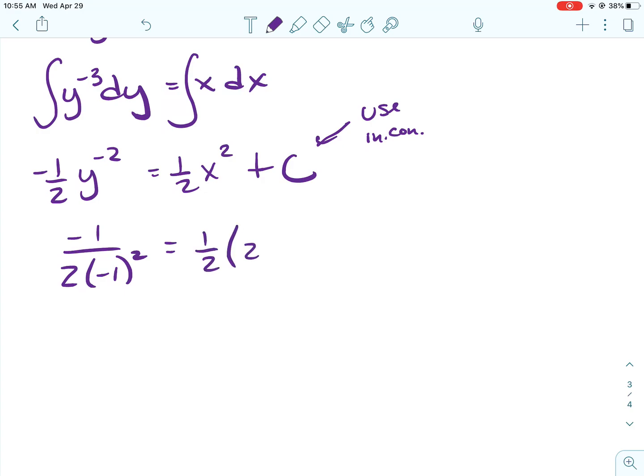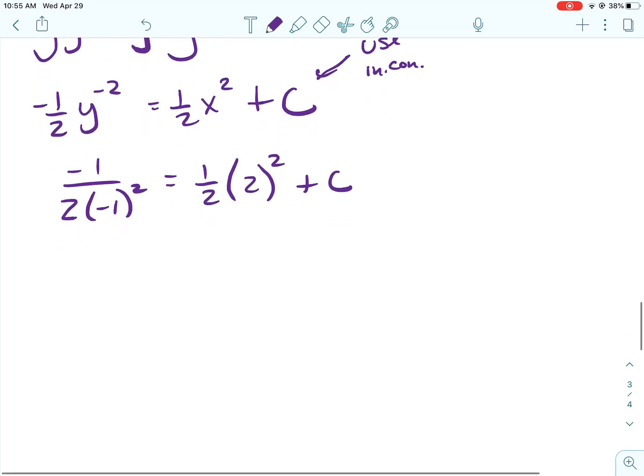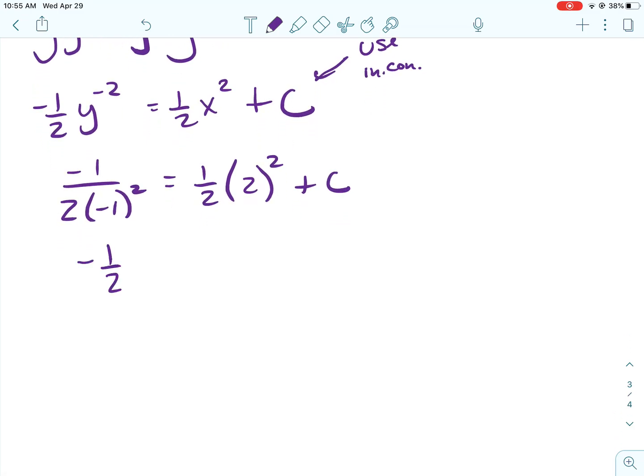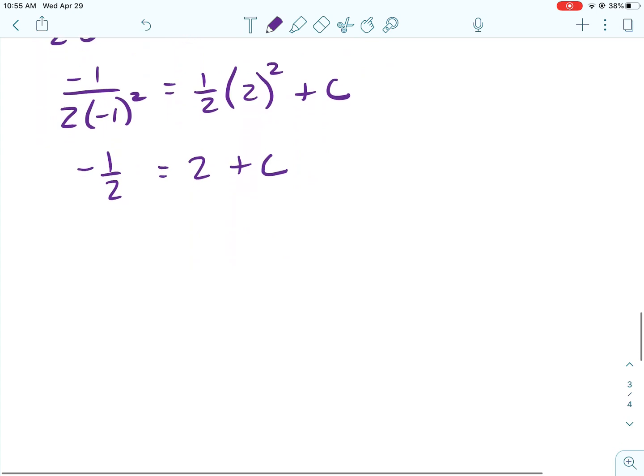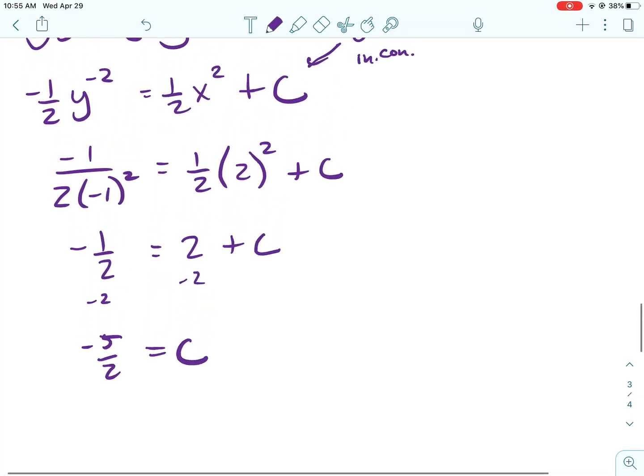Okay, so the y I'm putting in is negative 1, and the x is 2. I'm going to go ahead and do it that way, because the negative 2 is y squared on the bottom.